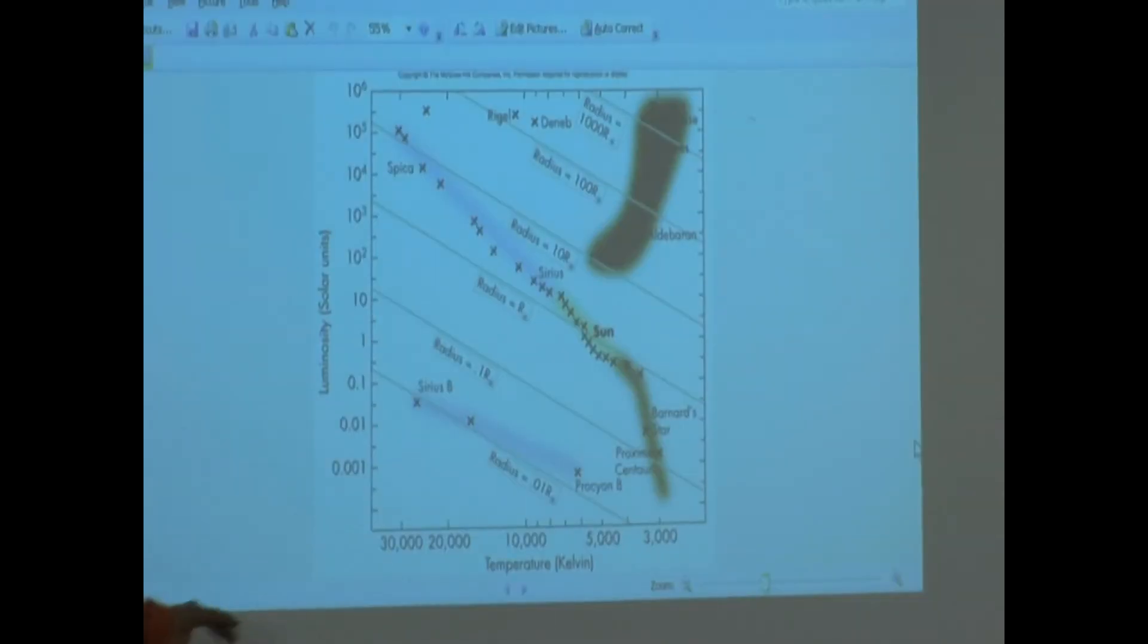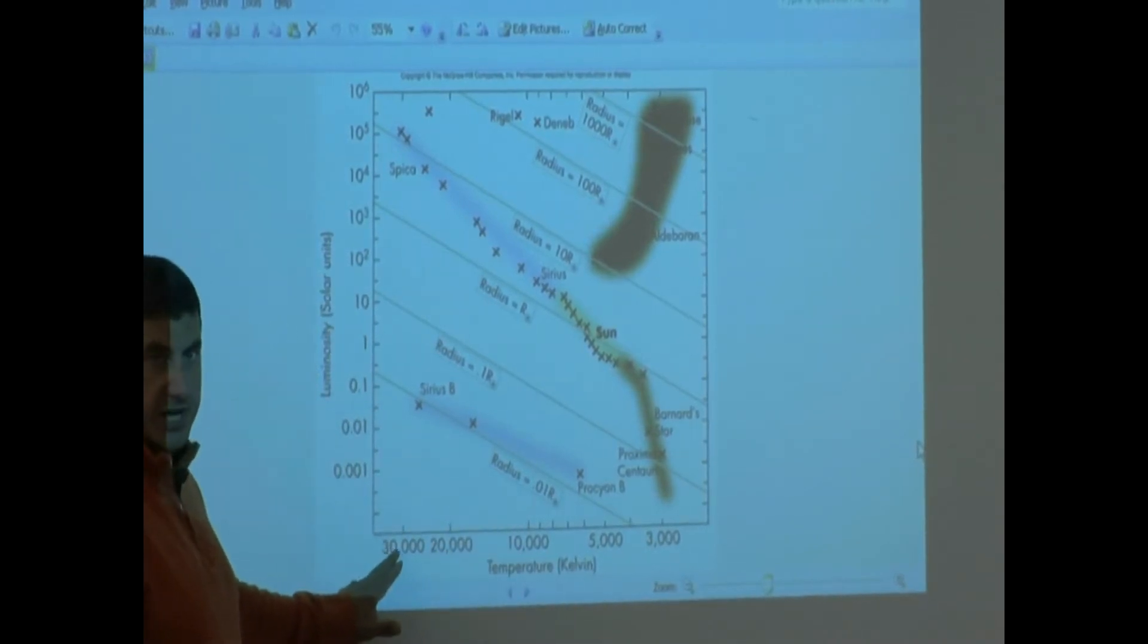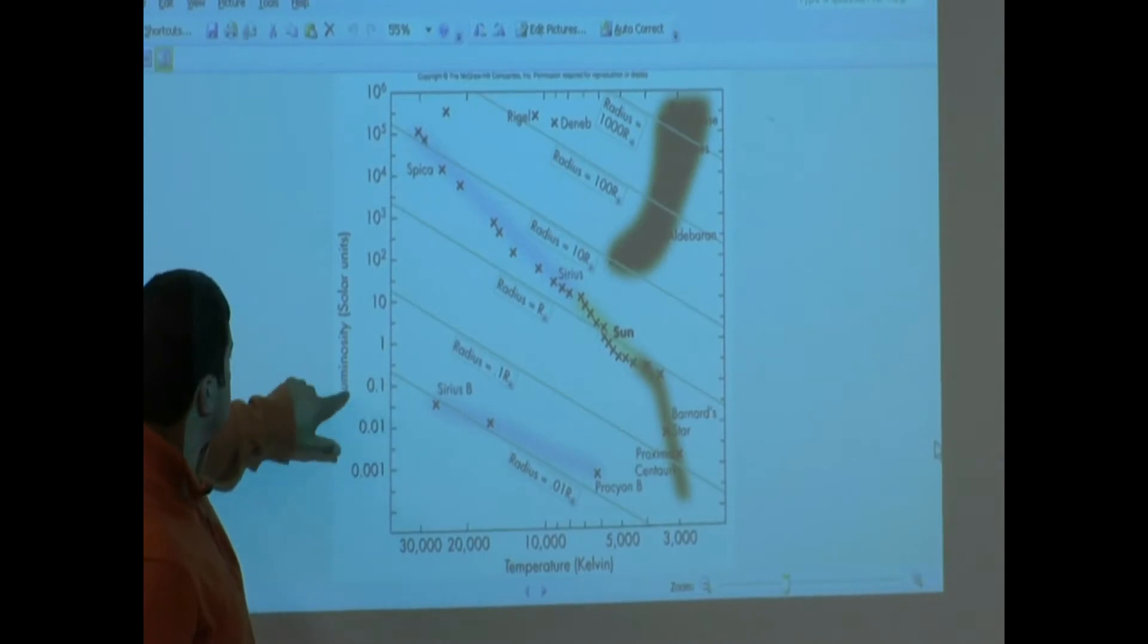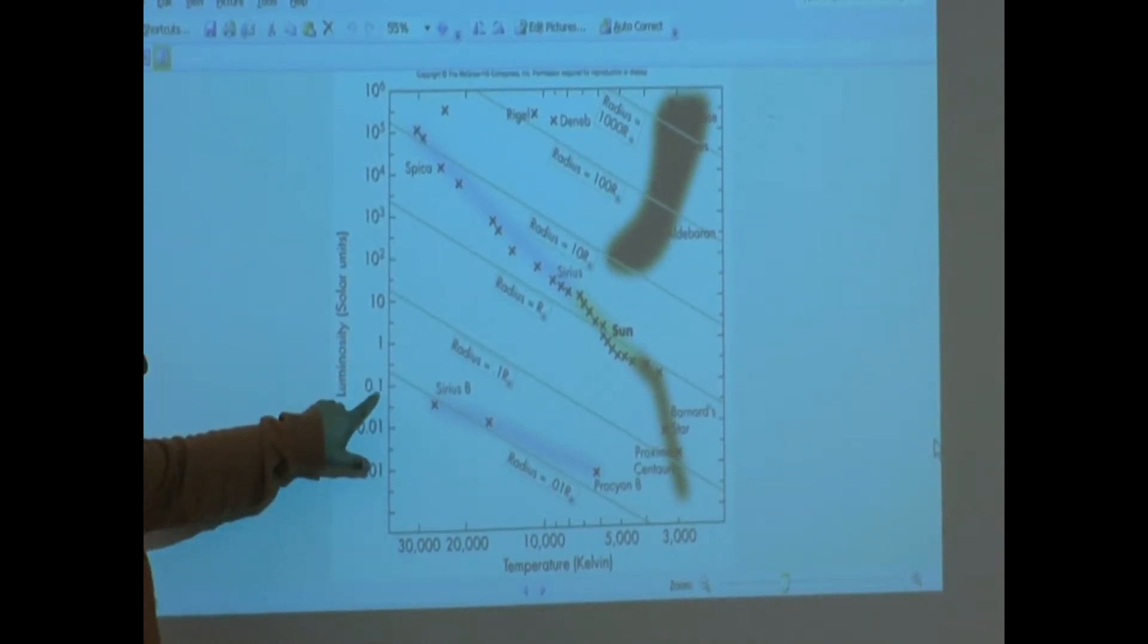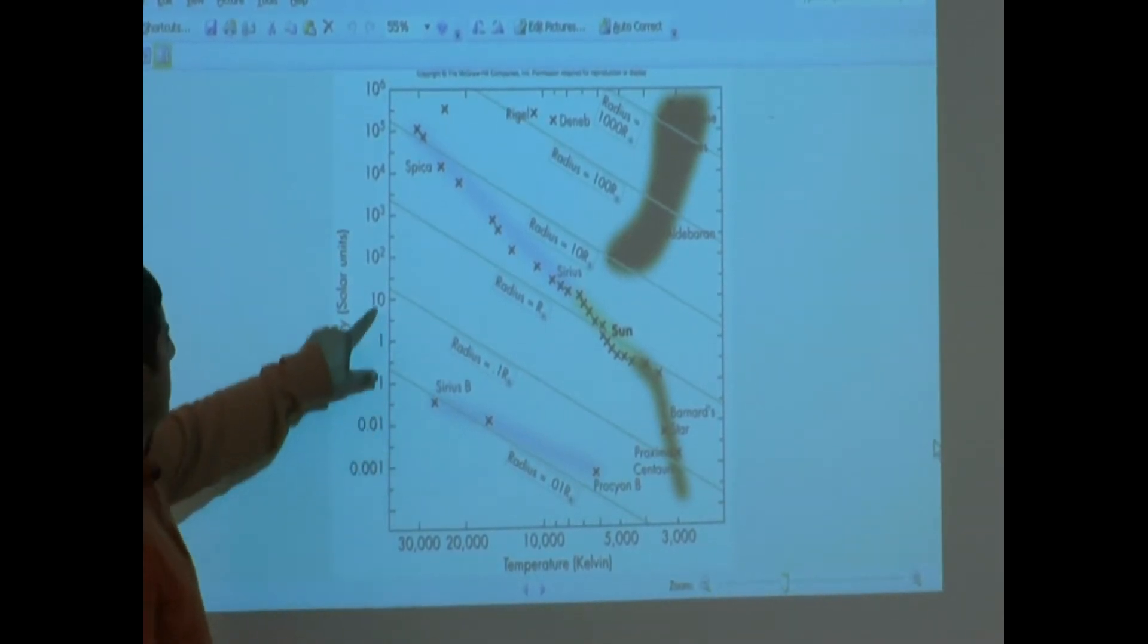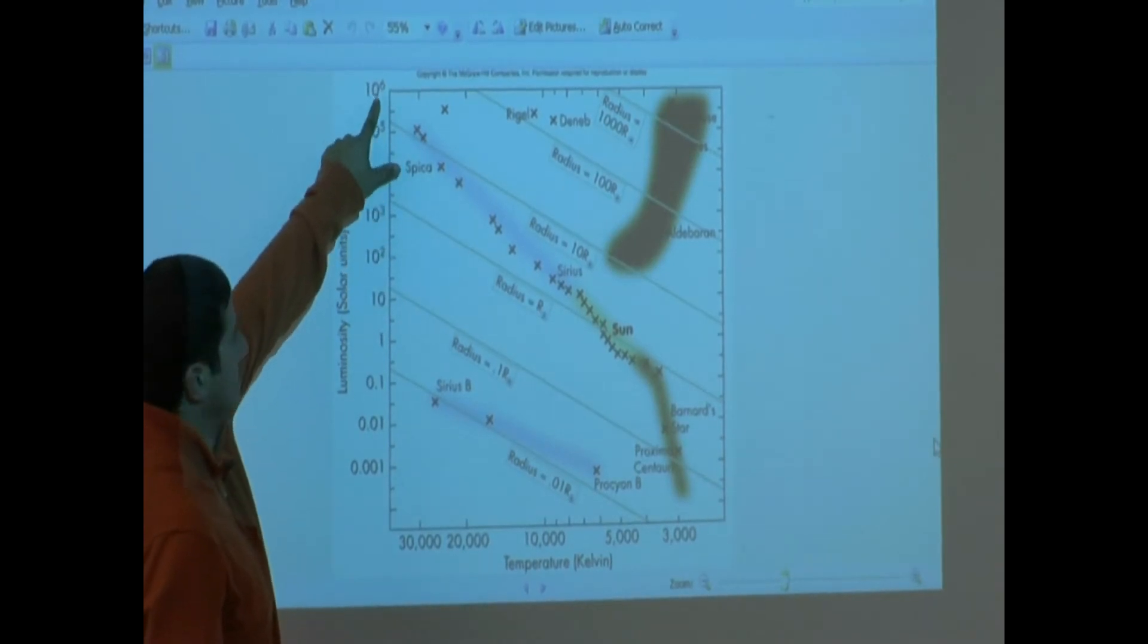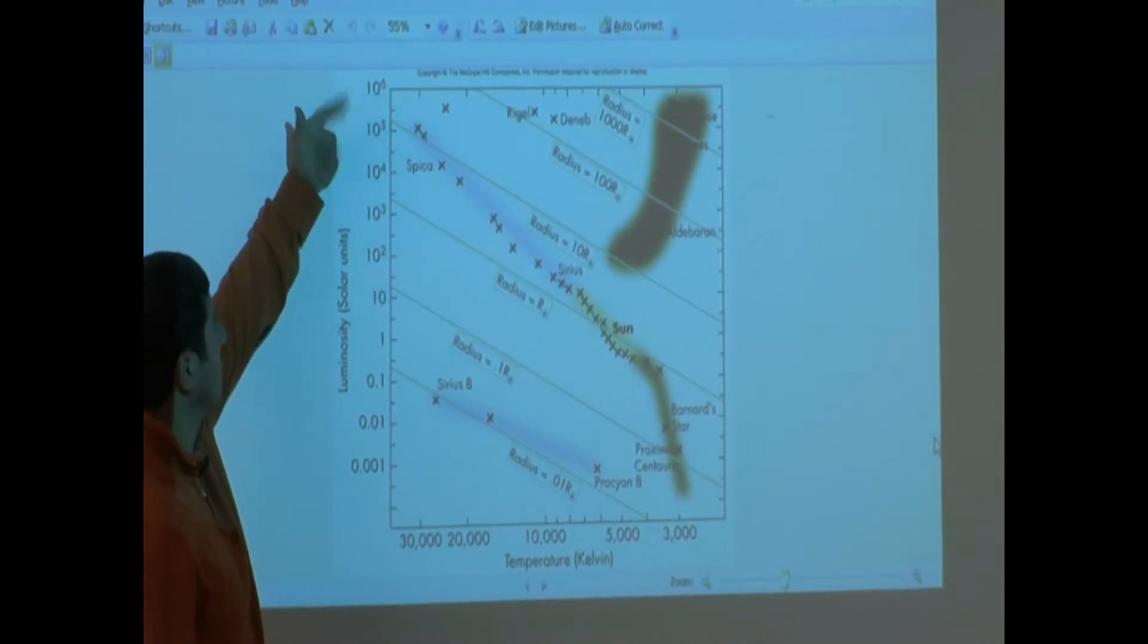So you can see cold stars here, 3000 Kelvin, and then on the other side 30,000. You see here the luminosity in comparison to the sun. One means luminosity of sun, 0.1 is one-tenth the luminosity of sun, one-hundredth, one-thousandth, 10, 100,000, 10,000, 100,000, million. That's about the brightest ones that are available.